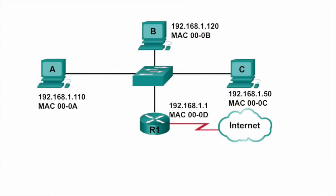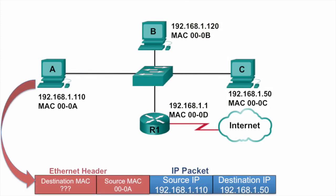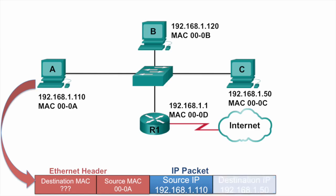In this video, we're going to see PCA send an ARP request for the MAC address of PCC. PCA has an IP packet with the source IP address of itself, 192.168.1.110, and the destination IP address of PCC at 192.168.1.50. So it needs to know what the destination MAC address will be. Because the source and destination IP addresses are on the same network, the destination MAC address will be that of PCC at 192.168.1.50.